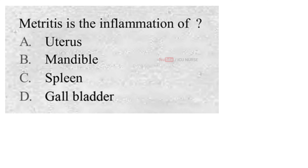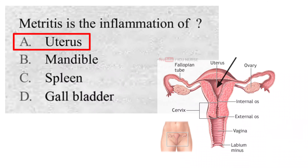Metritis is the inflammation of: A. Uterus, B. Mandible, C. Spleen, D. Gallbladder. And the correct answer is A. Uterus. Metritis is the inflammation of the uterus.